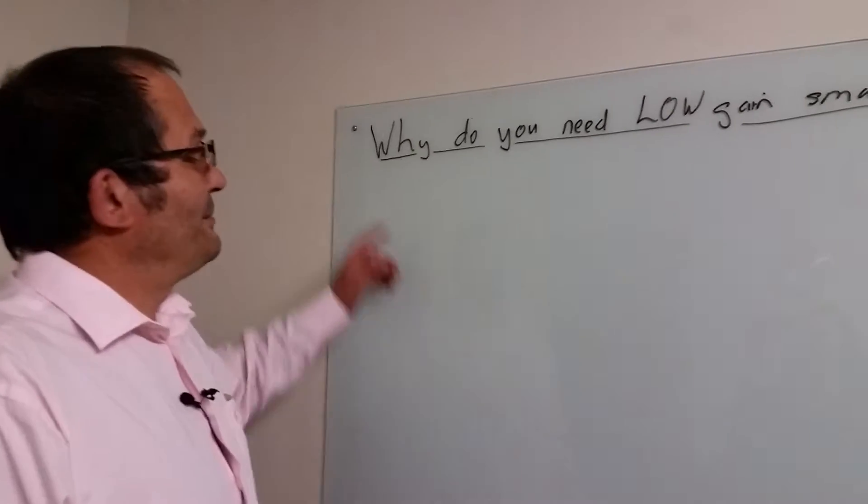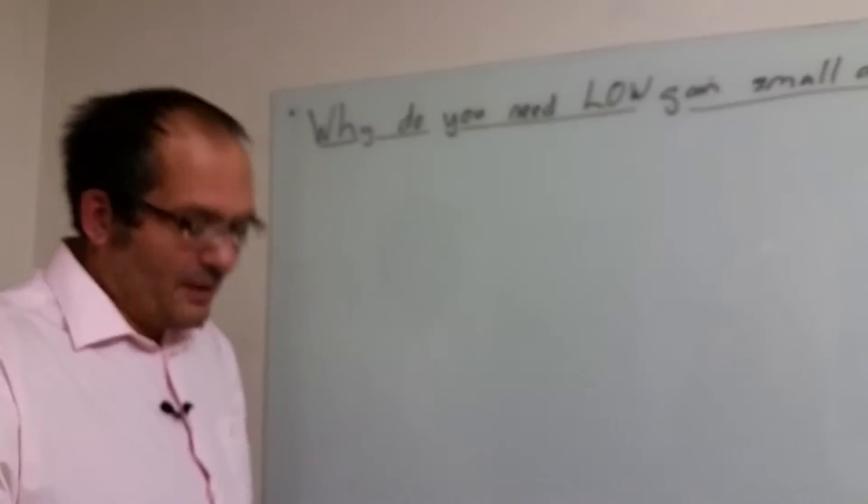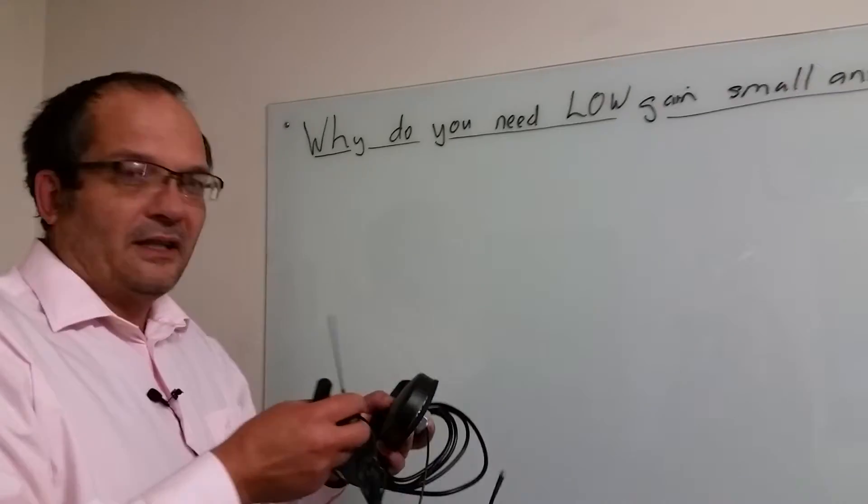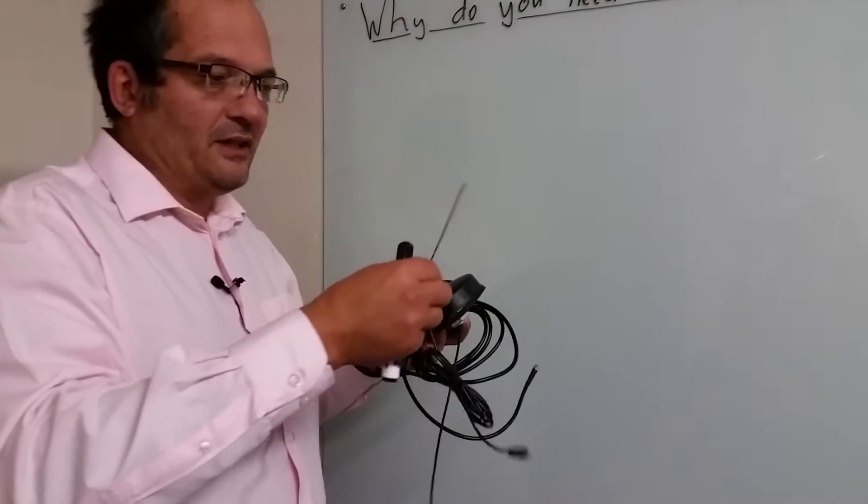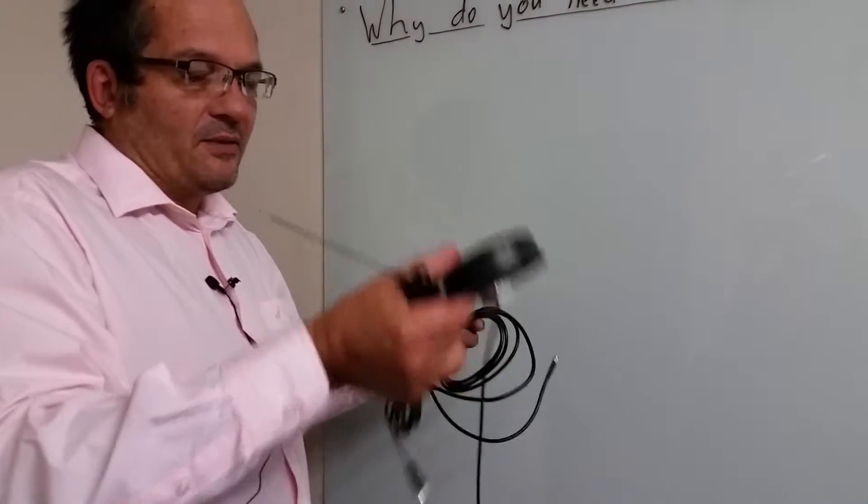An important question, and it may seem odd, is why do you need low gain small antennas and what I mean by small antennas? I'll show you some examples. Here are the typical antennas that you use at credit card machines, indoor machine-to-machine. This would be one example from another manufacturer. We make this one. It can mount on boxes.